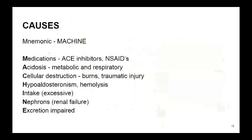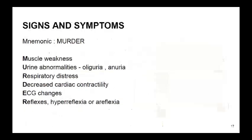Signs and symptoms of hyperkalemia — the mnemonic is MURDER. M for muscle weakness, U for urine abnormalities like oliguria and anuria, R for respiratory distress, D for decreased cardiac contractility, E for ECG changes, R for reflexes — hyperreflexia or areflexia.